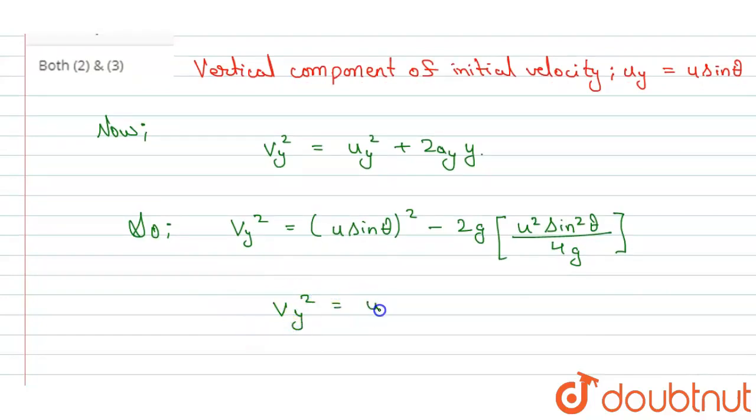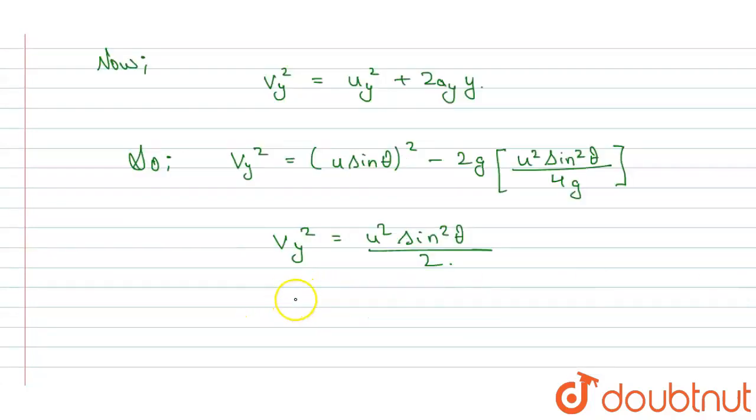we got vy² = u² sin² θ / 2. Okay, so we got vy = u sin θ / √2.